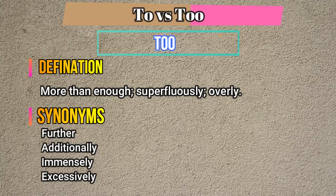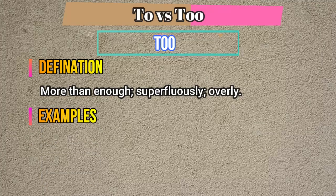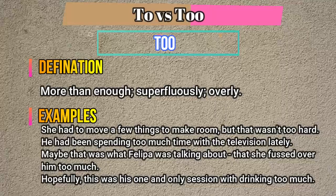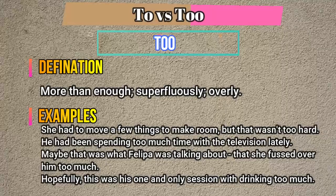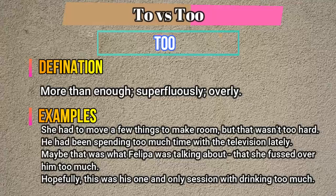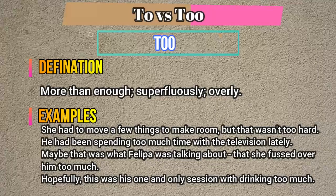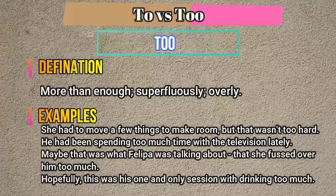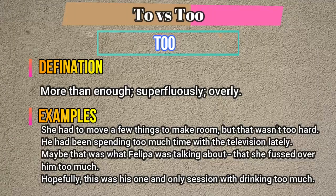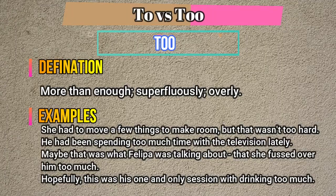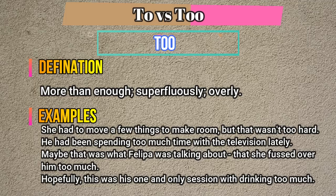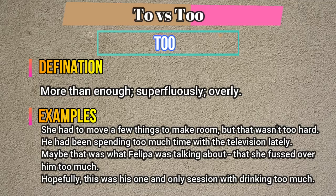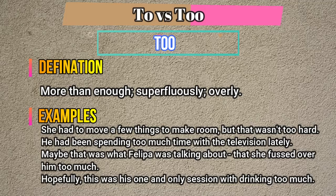And now let me show the examples of the word 'too' in sentences. She had to move a few things to make room, but that wasn't too hard. He had been spending too much time with the television lately. Maybe that was what Philippo was talking about — that she fussed over him too much. This was his one and only session with drinking too much.